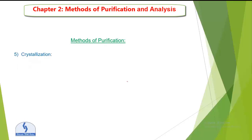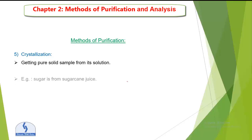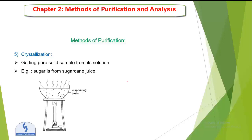Next is crystallization. Crystallization is a method of getting a pure solid sample from its solution. In evaporation we do not get a pure residue, but in crystallization we get pure crystals. Example: sugar is collected from sugar cane juice. In this method, water is removed by heating the solution, and heating is stopped when a hot saturated solution is formed.